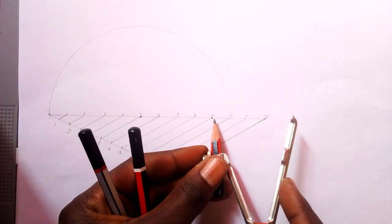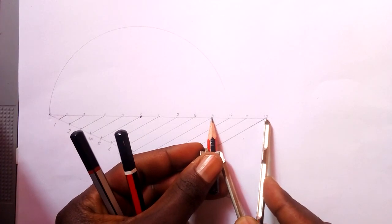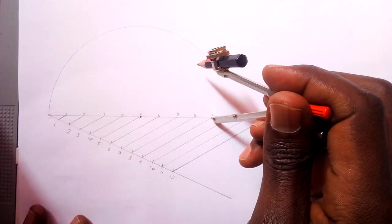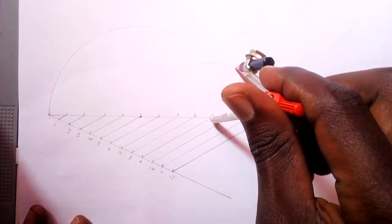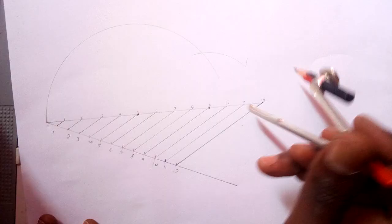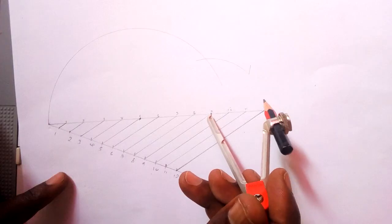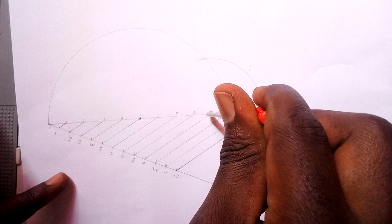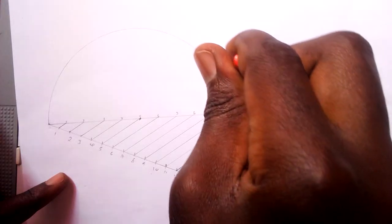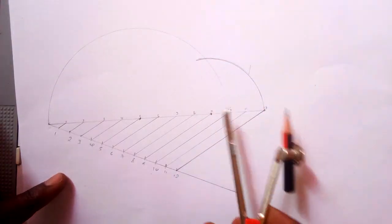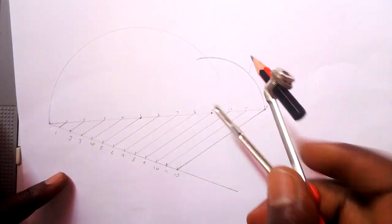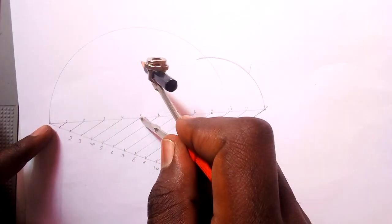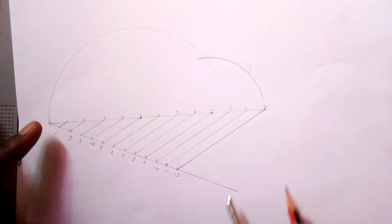Also take this lens and draw another semi-circle. So you are taking this lens and placing your compass here and drawing a semi-circle. Also take this lens, place it here, and draw a semi-circle.